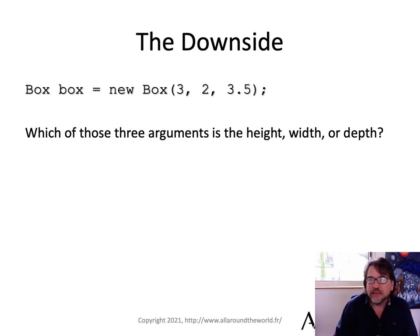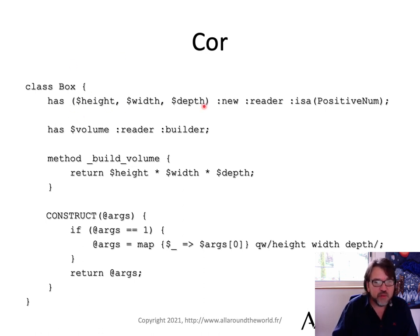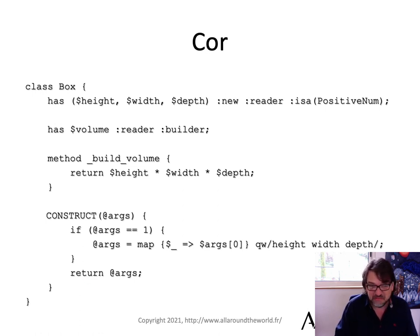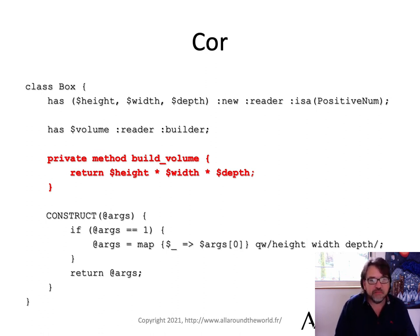In Cor, how would you do that? Simple: height, width, depth with 'new' and a reader. Instead of BUILDARGS, we have a 'construct' method — we call it 'construct' because it behaves a little bit differently from BUILDARGS. If I only have one argument, I know that's for the overloaded constructor. I map those out to height, width, and depth and just return the args. Then I have a private method _build_volume, which just works exactly as you'd expect. There's nothing fancy.